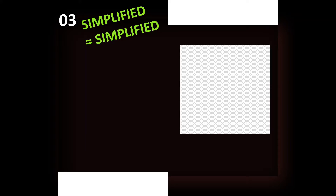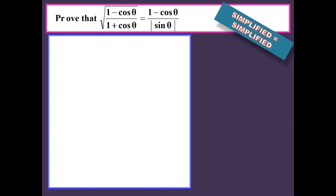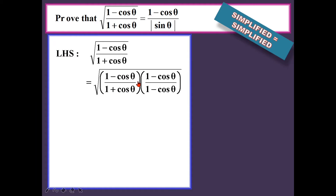The next type of question is simplified equals simplified. For this type of question, you don't even know how to start from either side because there is nothing to simplify. So for this type, we have to make one side complicated — either we add or subtract the same equation, or we multiply or divide with the same equation. For example, starting from the left-hand side, I'm going to multiply the numerator and denominator with the conjugate of the denominator — I'm going to use (1 minus cos θ) over (1 minus cos θ).